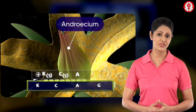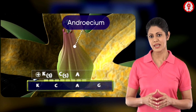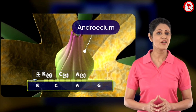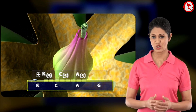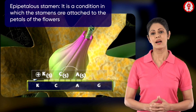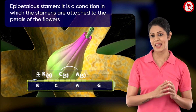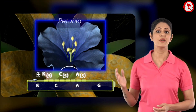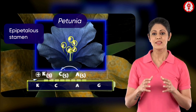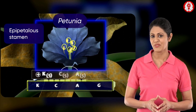The androecium is symbolized by the letter A. The number of stamens and degree of fusion is represented in a similar fashion to the calyx, written as A5. In addition, if the stamens are epipetalous, a line can be drawn connecting the C and A. For example, a petunia has five epipetalous stamens, which would be represented as C5 A5.